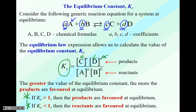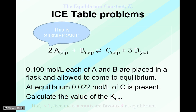We can also use our equilibrium constant along with ICE tables to answer complex questions. Let's take a look at an ICE table problem using the equilibrium constant. Remember that coefficients become significant — for example, a coefficient of 1 where there's no written number, and a coefficient of 3 where specified. These coefficients become part of the equilibrium constant formula.